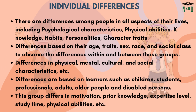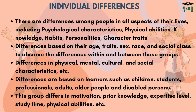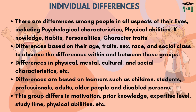Another important topic is individual differences. There are differences among people in all aspects of their lives, including their psychological characteristics, physical abilities, knowledge, habits, personalities, and character traits. The study of individual differences focuses primarily on group differences in psychology. Here we aim to classify individuals based on age, traits, sex, race, and social class to observe the differences within and between those groups. Differences in physical, mental, cultural, and social characteristics are studied under individual differences, and individual differences are now considered to encompass any aspect of a person's total personality that can be measured.